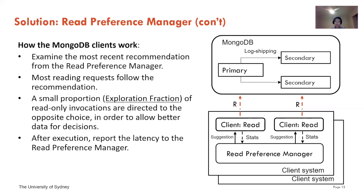By doing this, most reading requests are sent to the primary copy and a small proportion of read-only invocations are directed to a secondary copy. In this setting, we can understand the situation on both choices. After execution, all clients report the read latency observed on the client side to the Read Preference Manager.